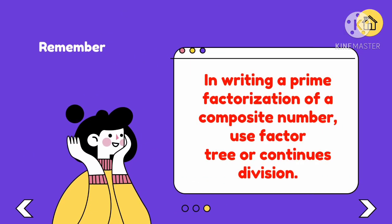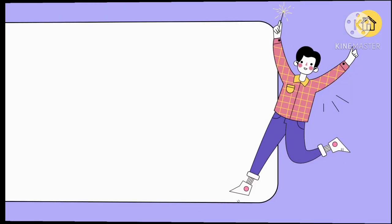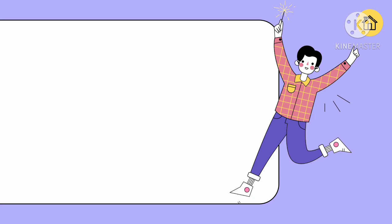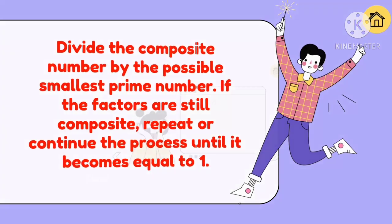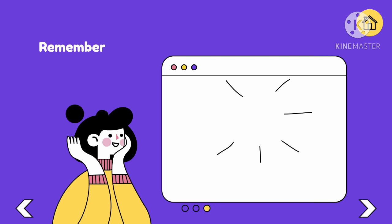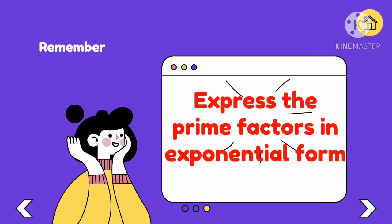Always remember that in writing a prime factorization of a composite number, use factor tree or continuous division. Divide the composite number by the possible smallest prime number. If the factors are still composite, repeat or continue the process until it becomes equal to 1. Then express your answer or the prime factors in exponential form.